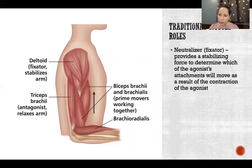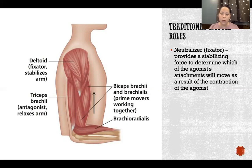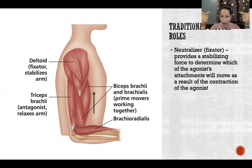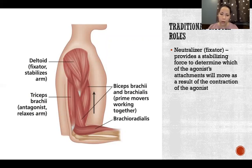A neutralizer, also referred to as a fixator — they mean exactly the same thing — is a muscle that provides a stabilizing force to determine which of the agonist's attachments will move as a result of the contraction. When a muscle shortens, it can pull either attachment closer to the other, and whichever bone or segment has the least mass is generally the one that moves because it has less inertia. Neutralizer or fixator muscles produce force acting on the bones that the agonist is attached to, helping control which bone is moving and in what direction.